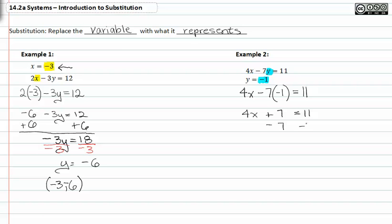Subtract seven from both sides and we get four x is equal to four. Divide by four on both sides and we get x is equal to one.